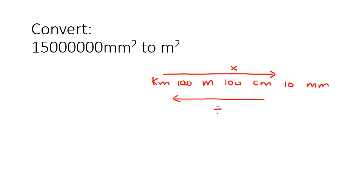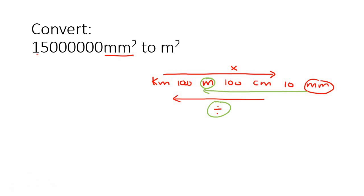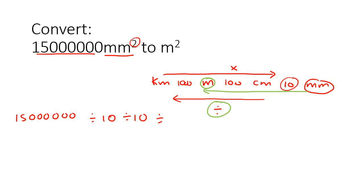Okay, here's another one. So here we're going from millimeters, which is over there, to meters, which is over there. So we're going to the left-hand side, so we will divide. So you're going to take this number — 1,500,000 — and then we're just going to divide by all the numbers that we pass. We pass a ten, but do that twice because we have a two, and then there is a hundred, but just do that part twice. That gives us 15, so that'll be 15 meters to the power of two.